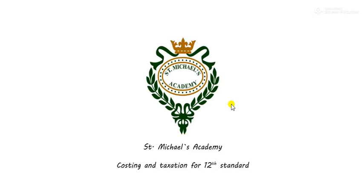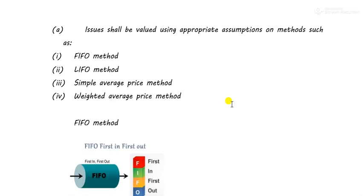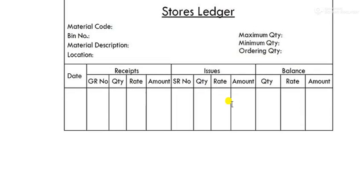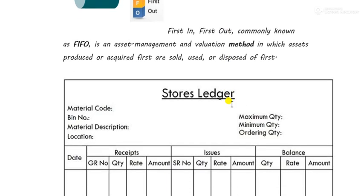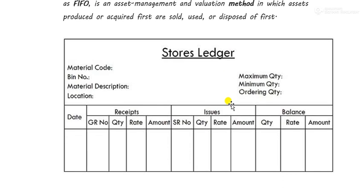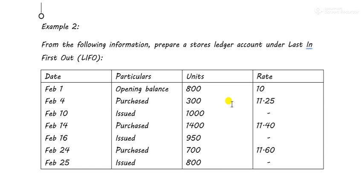Good morning students and welcome to the classes of Costing and Taxation. We had started costing and we were doing Chapter 1 - Cost of Materials. We learned in the first class that there are four methods of valuation of materials, and in the last class we solved an example under the FIFO method. The main practical aspect of this chapter is making a stores ledger.